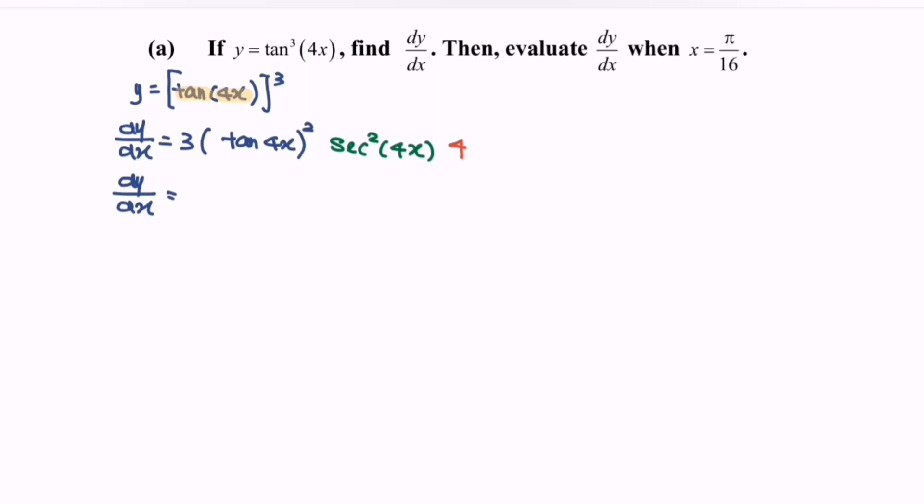dy dx is equal to 12, multiply with the tangent 4x square, multiply with the second square with the angle 4x. Kindly substitute the value x is equal to pi over 16 and simplify the situation.